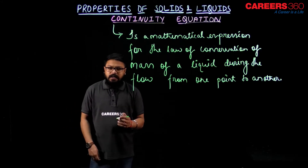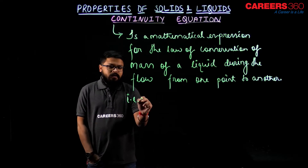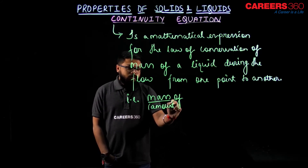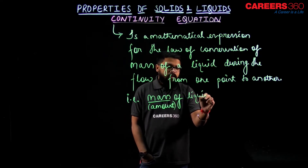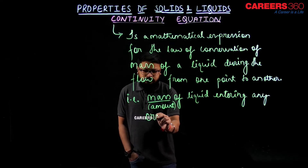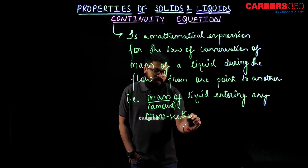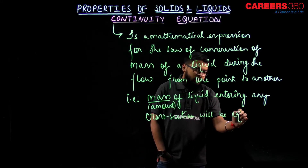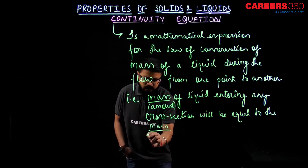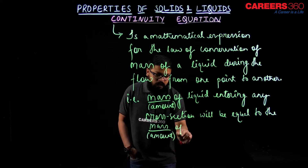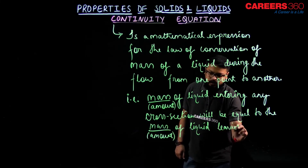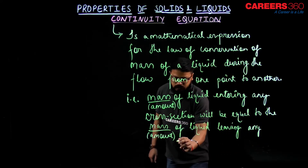Let us see mathematically what it looks like. The mass entering — and when I say mass, I mean the amount of liquid entering any cross section — will be equal to the mass, that is the amount of liquid, leaving any cross section.